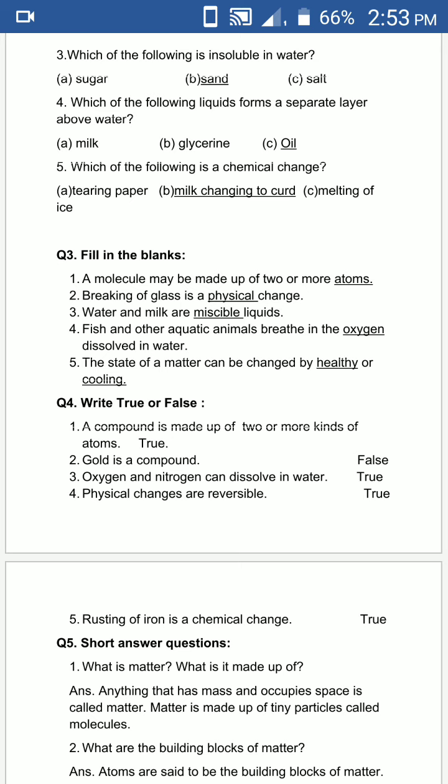Fourth one is physical changes are reversible. Yes, it is a true statement. Your answer true aayega. Jo physical changes hain, woh easily reversible ho jate hain. Fifth and last true or false is rusting of iron is a chemical change. This statement is true.